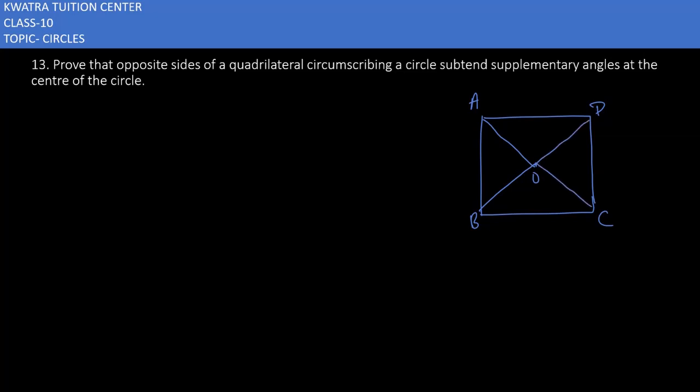And we have to draw a quadrilateral on the opposite sides. So we have to join all the points with O first of all. So according to this, we have AOB on side AB.